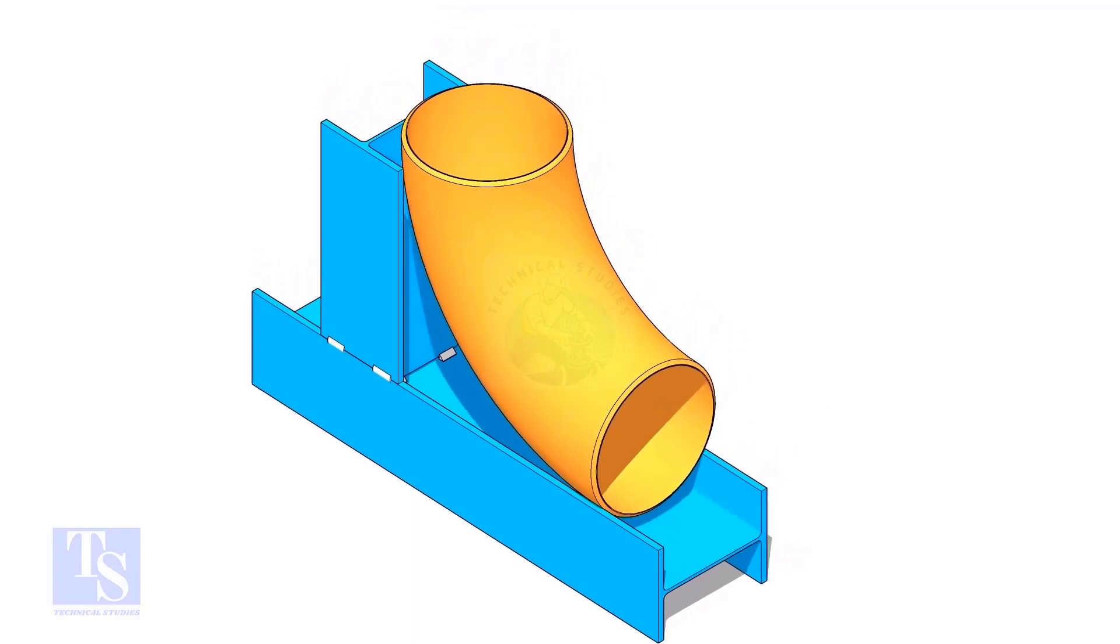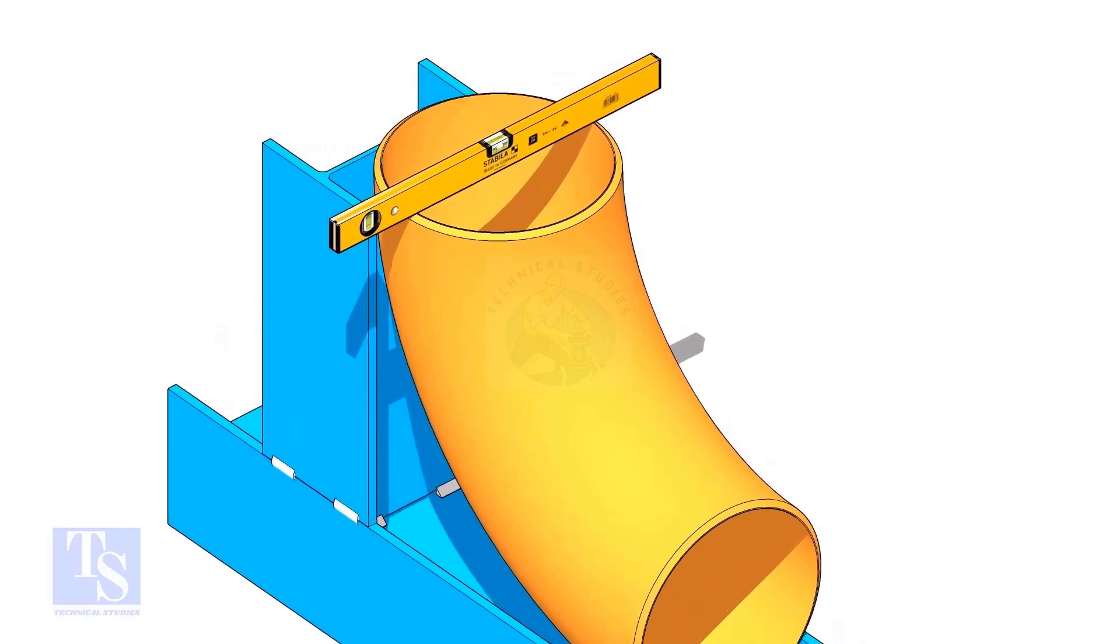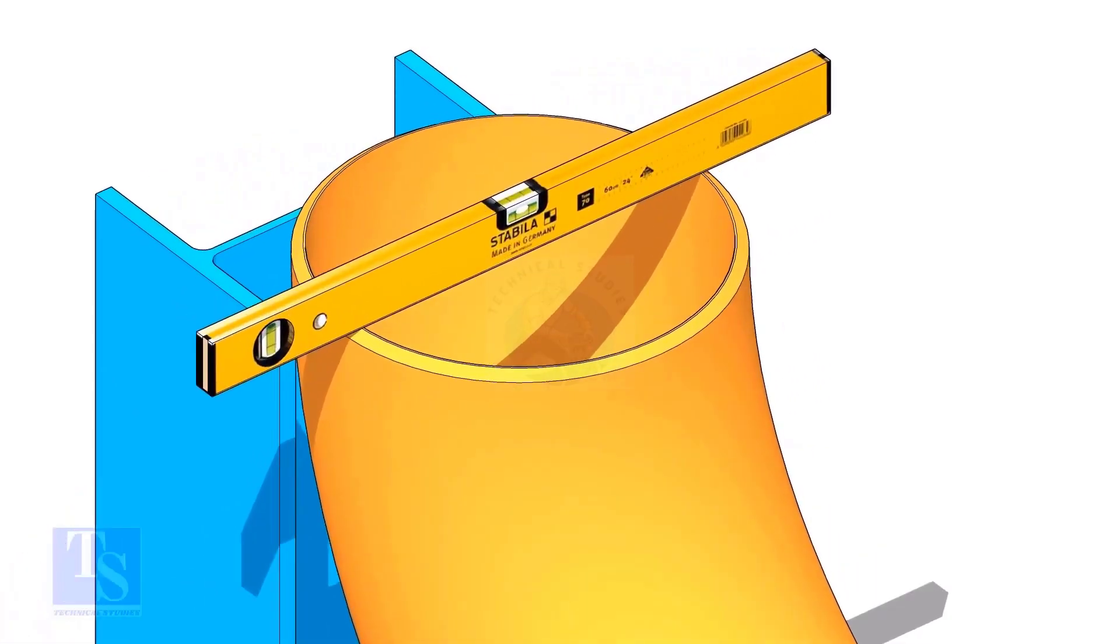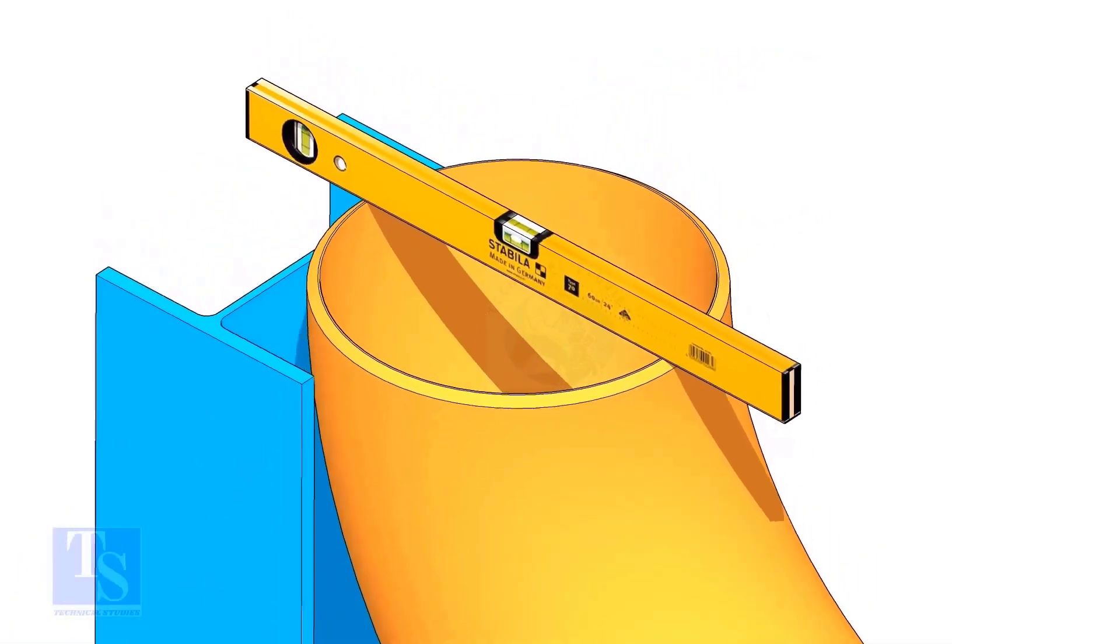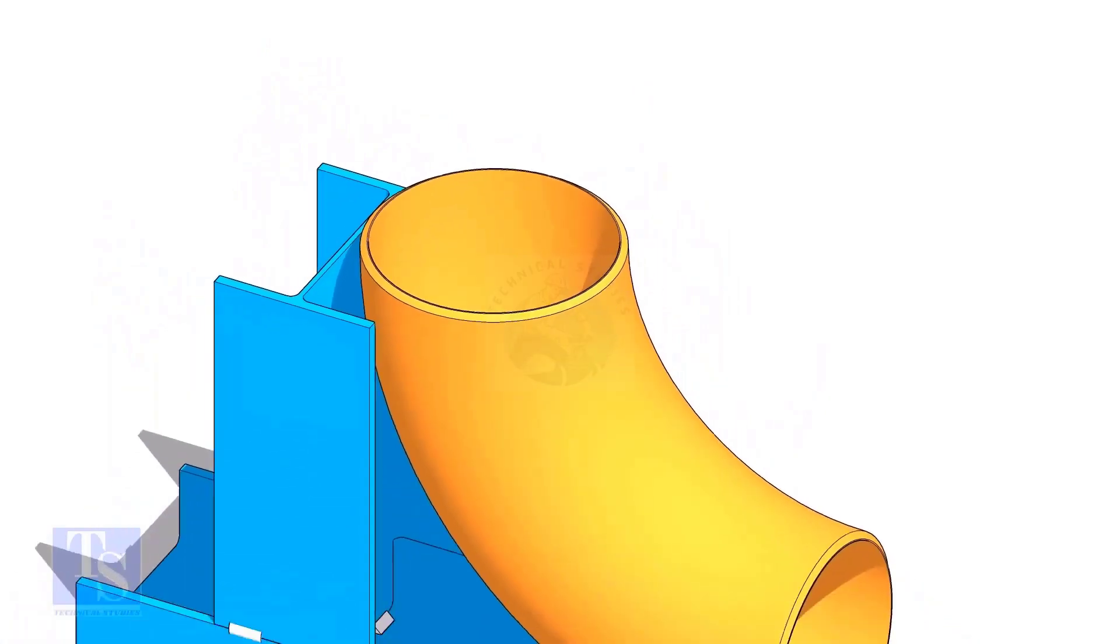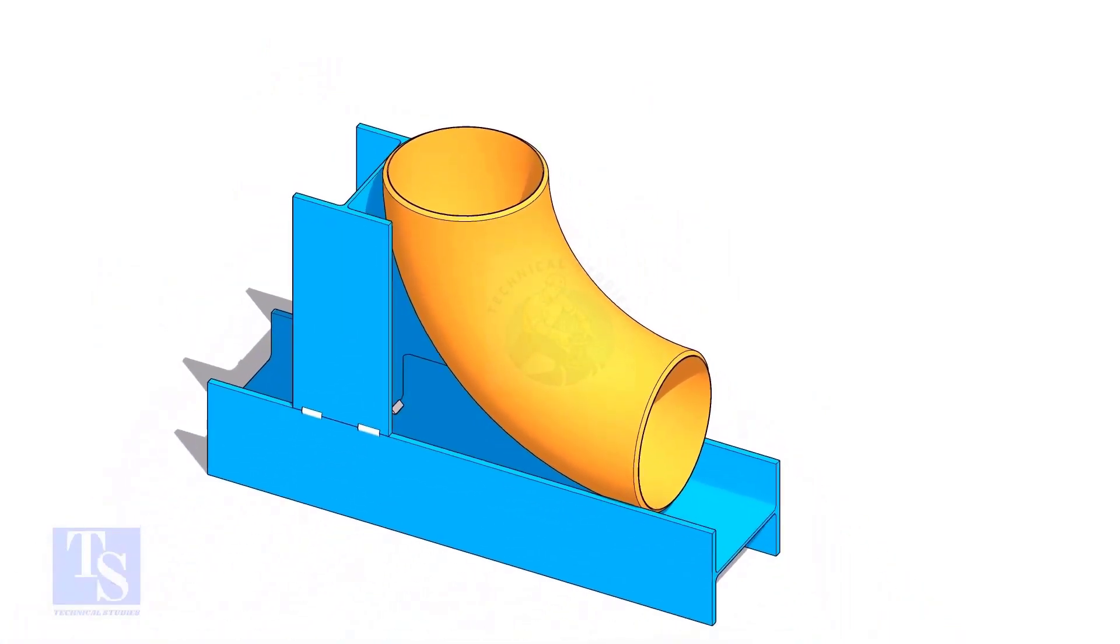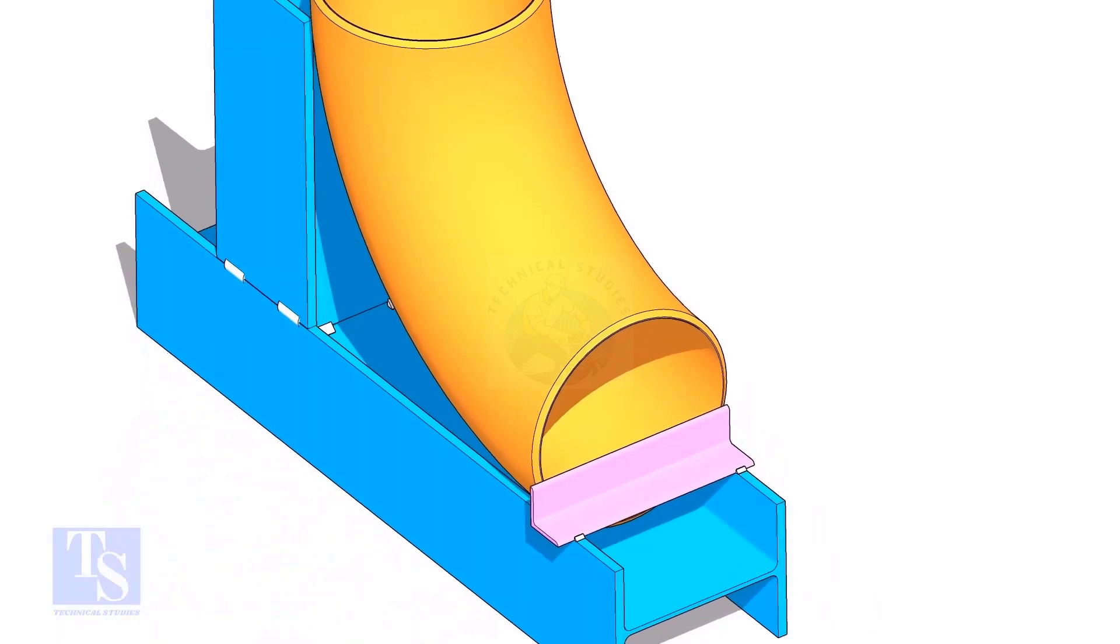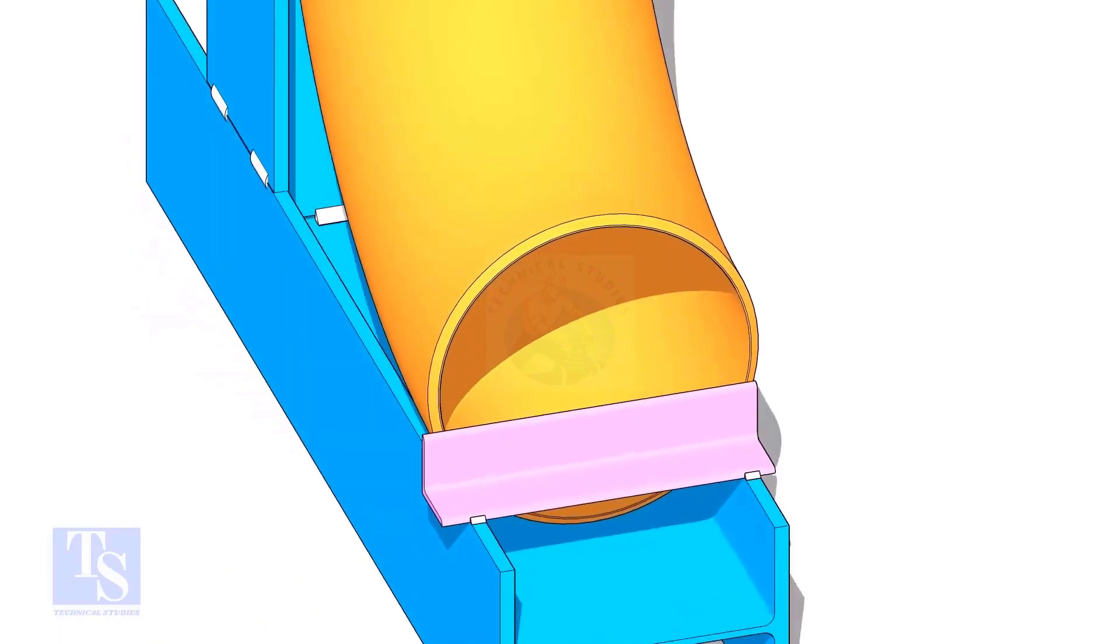Put the elbow in the jig. Level the top face of the elbow on both ways. Tack weld a piece of angle bar or a piece of a plate at the bottom side of the jig to arrest the elbow.